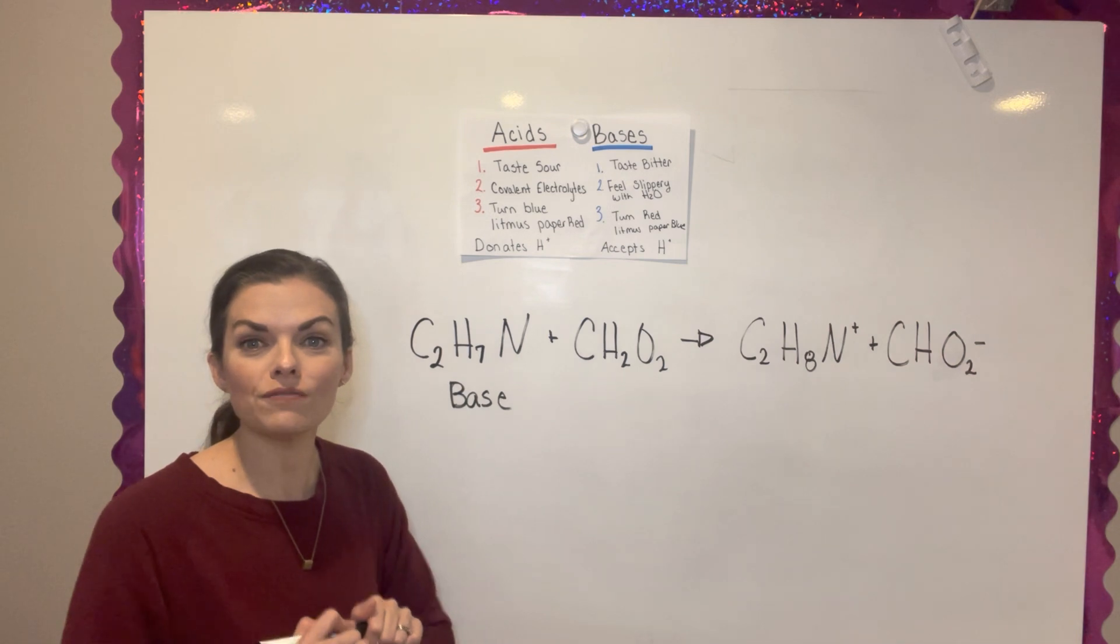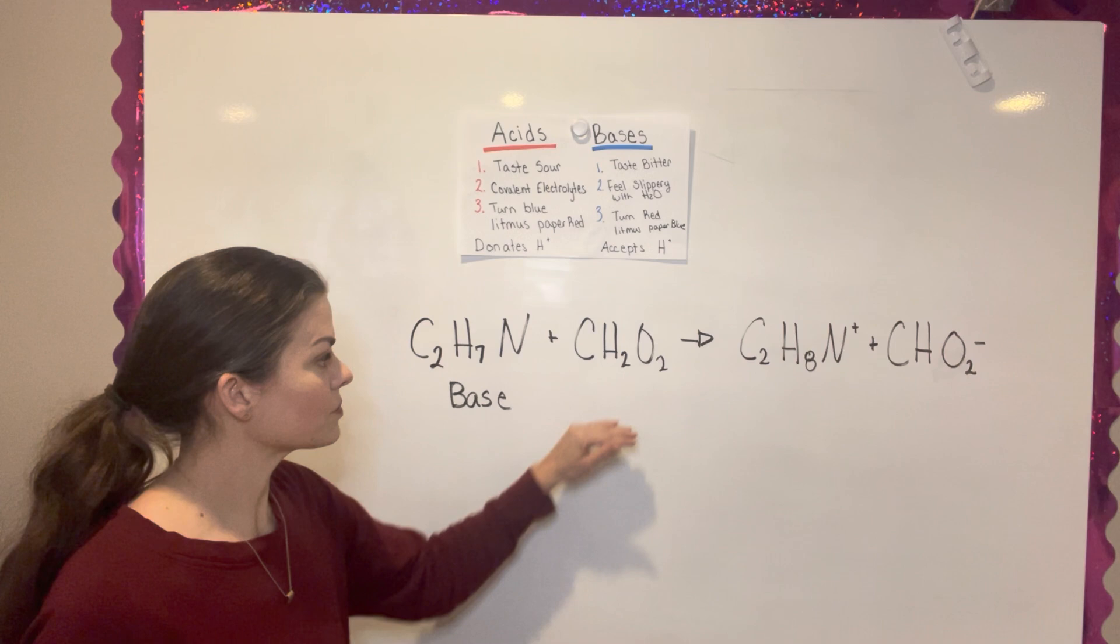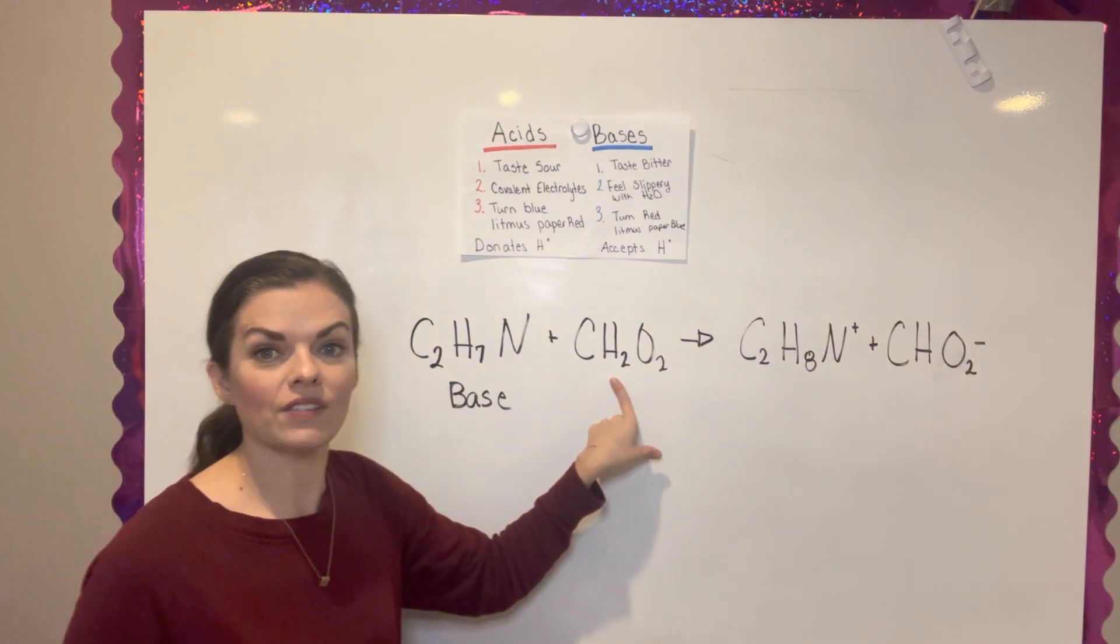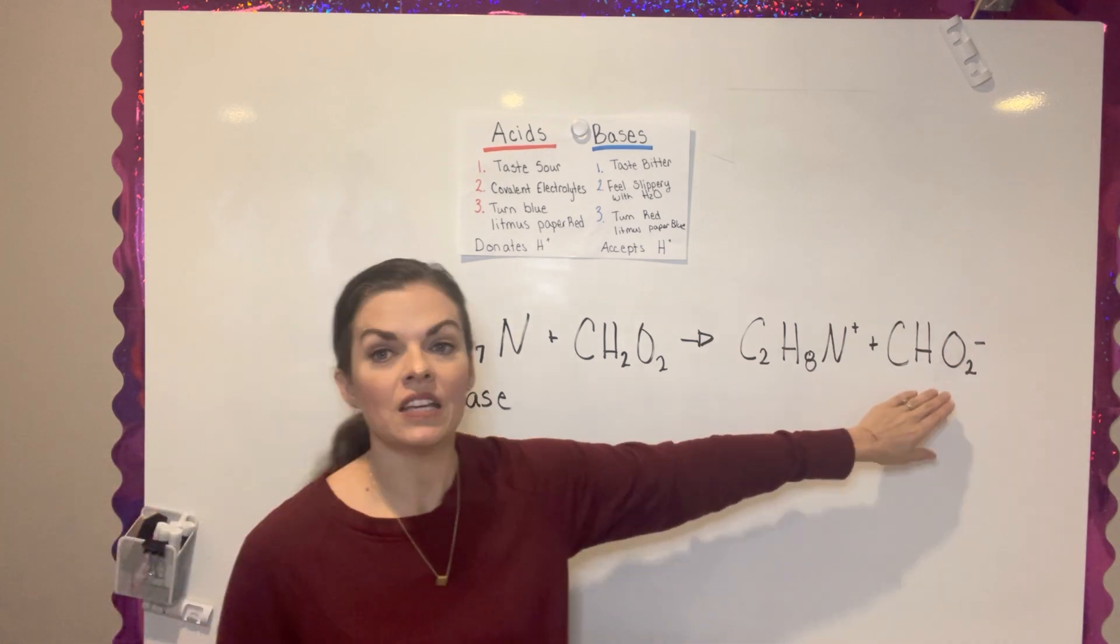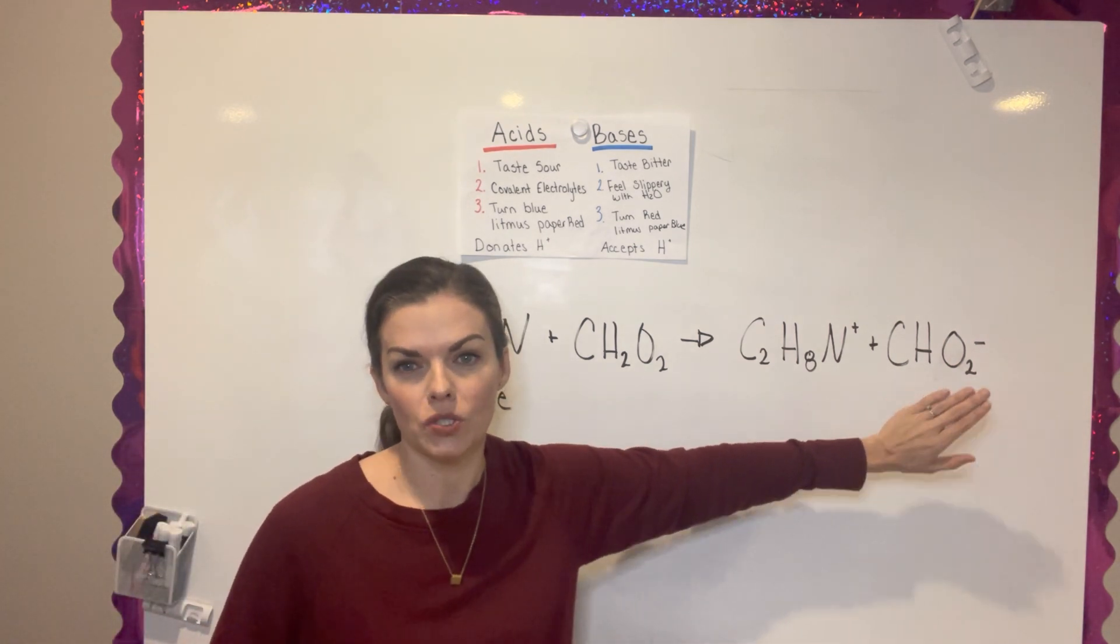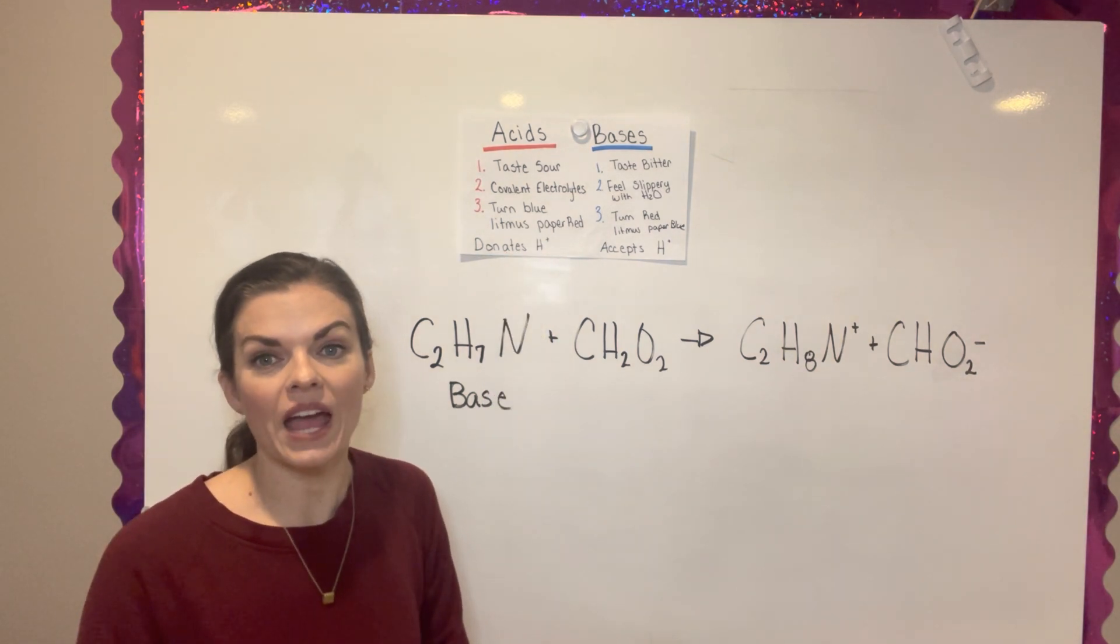By figuring out my acid, I'm looking for a compound that gets rid of a hydrogen. This one goes from having CH2, so two hydrogens, and in the end it has one hydrogen. So it's lost a hydrogen. If you think donates a hydrogen, it is going to be your acid.